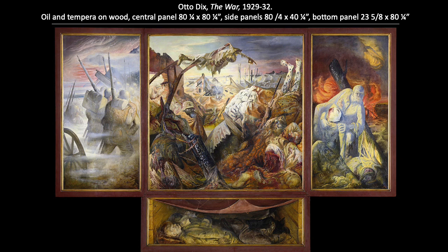Underneath the central panel, in the bottom section called the Predella, Dix has painted a sleeping or dead soldier lying in a trench. The triptych format is traditionally used for religious scenes, with Christ's crucifixion in the center and his entombment in the Predella below. By using this format, Dix elevates the importance of his subject matter, and in associating an ordinary soldier with the soon-to-be resurrected Christ, he endows him with the status of a martyr.